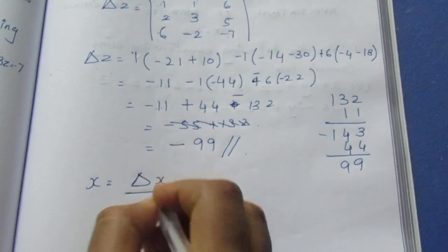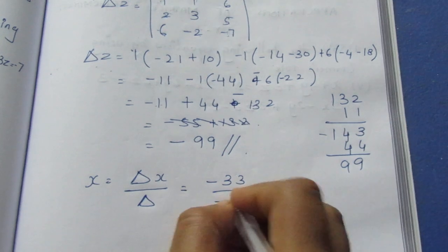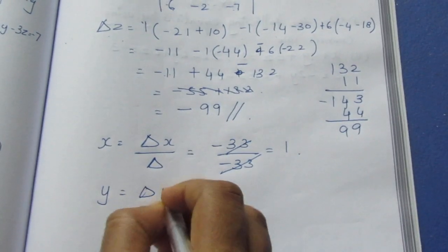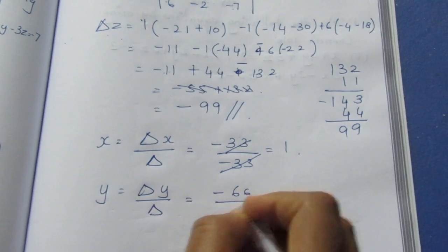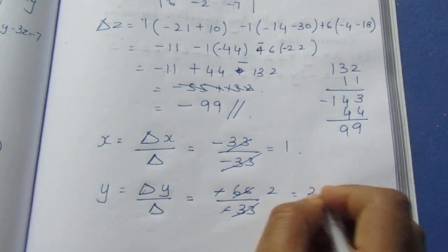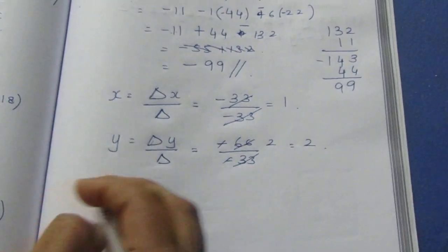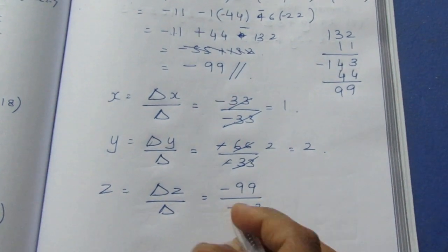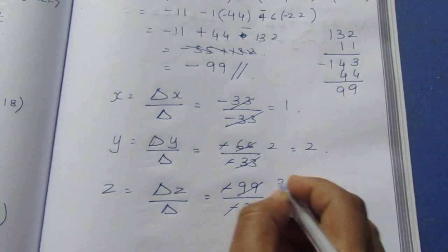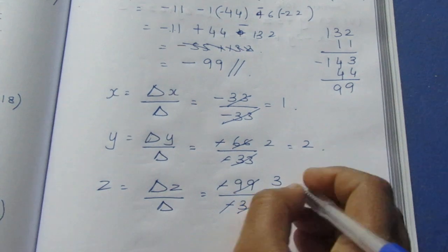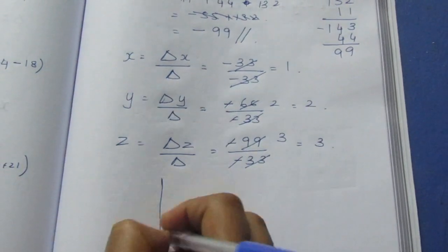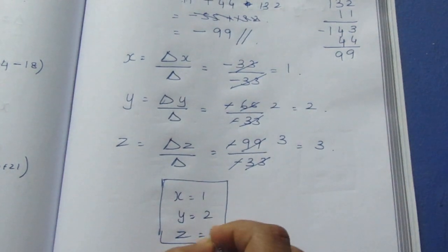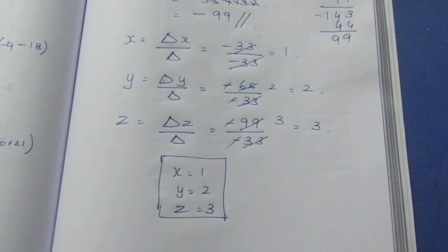So: x = delta x / delta = minus 33 / minus 33 = 1. y = delta y / delta = minus 66 / minus 33 = 2. z = delta z / delta = minus 99 / minus 33 = 3. Therefore, x = 1, y = 2, z = 3. That is the answer for this sum. Thank you.